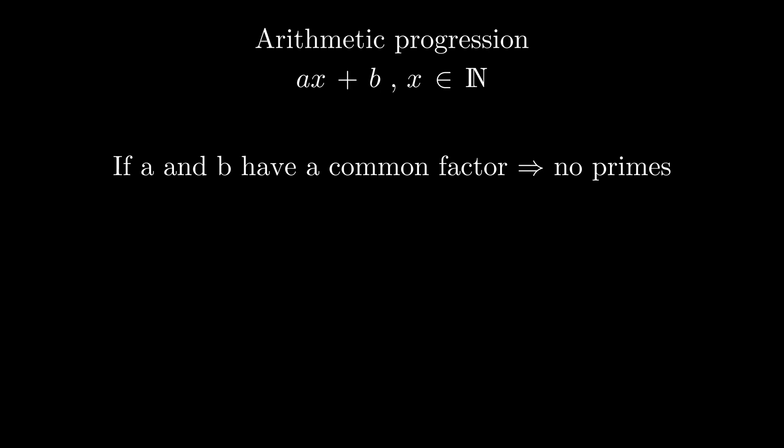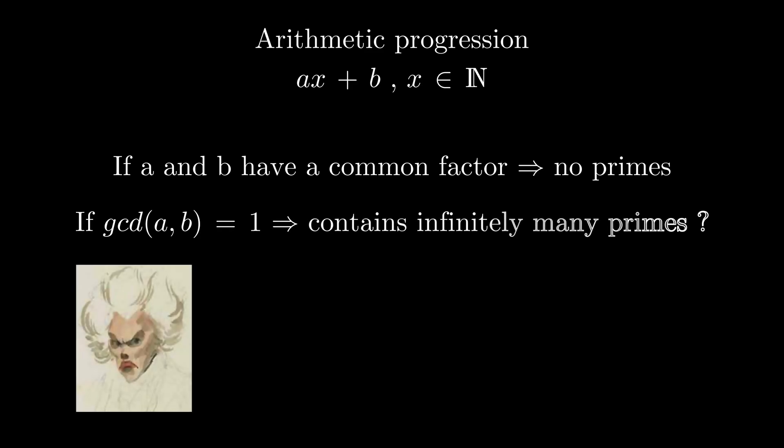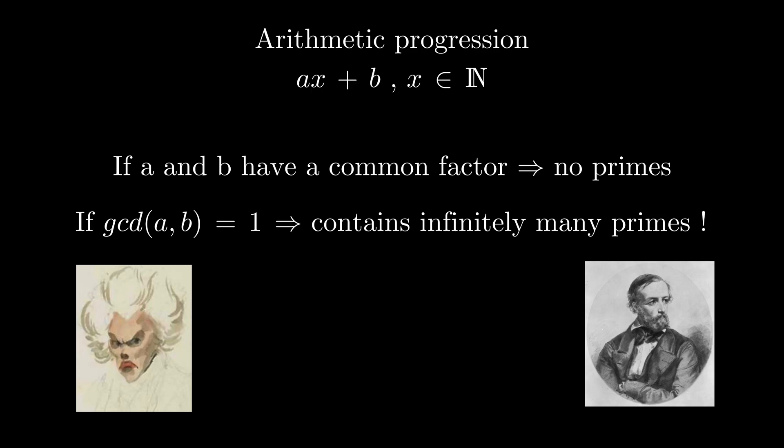And what happens if a and b are co-prime? Legendre made a conjecture that such a sequence will contain an infinite number of primes. Lucky for us, it was proved by Dirichlet in 1837.